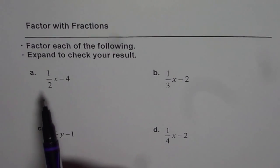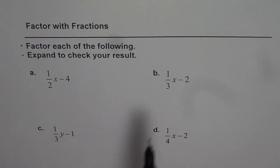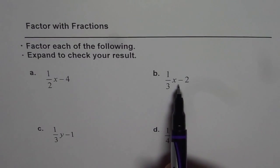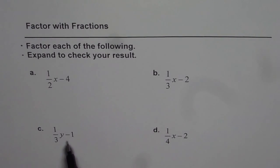The first one is (1/2)x minus 4, the second one (1/3)x minus 2, then we have (1/3)y minus 1, and (1/4)x minus 2.